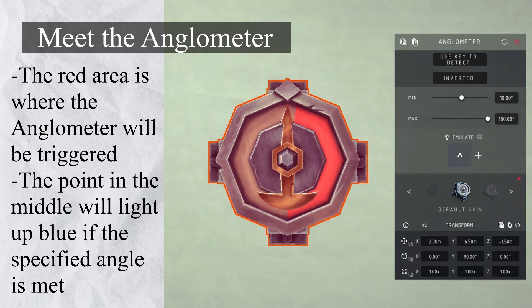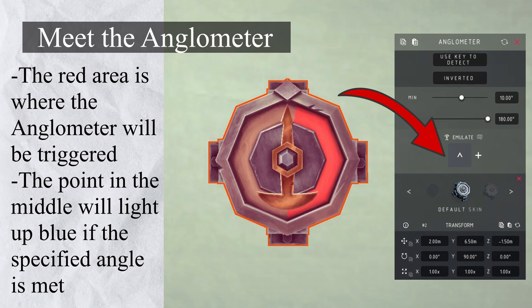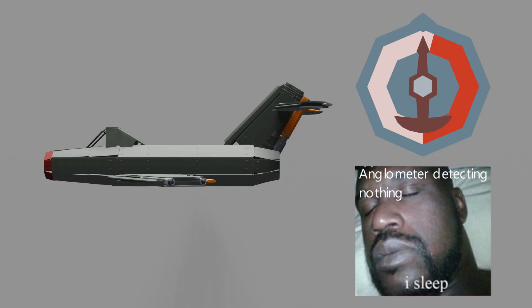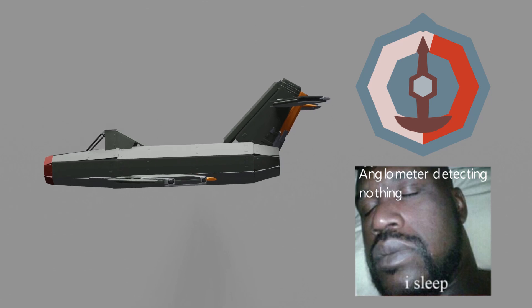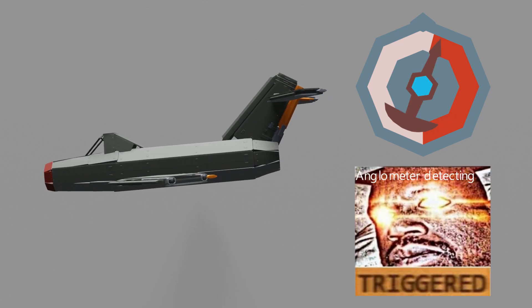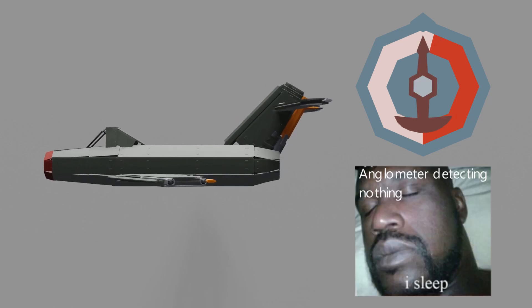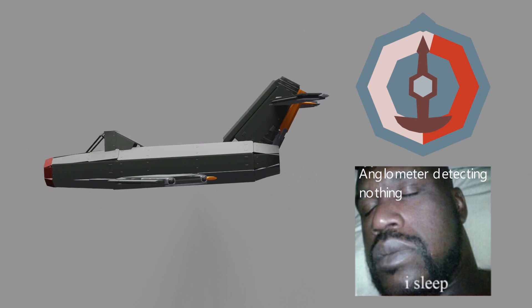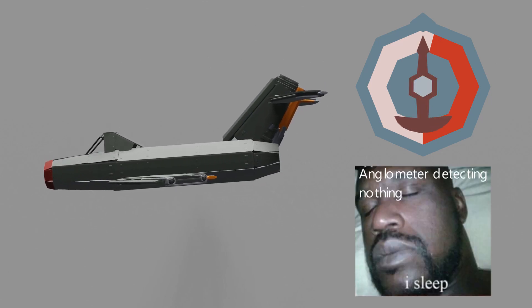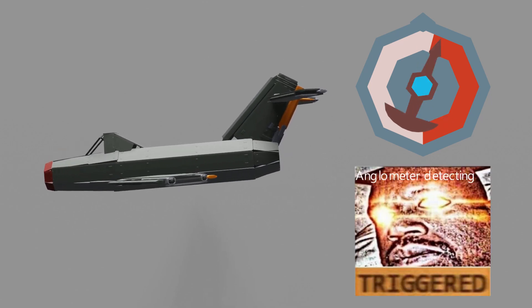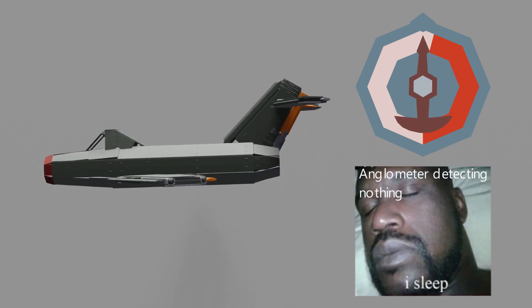If you haven't noticed, there is an option to limit the angle of your sensor and also a key that will be triggered if the specified angle is met. This means that if we set the angle to 5 degrees and our plane elevates 5 degrees down, it will trigger a key. This key should be the keybind you use to make your plane go up. Same goes for the rolling axis, but instead of the elevator keybinds, you will have to use the keybinds for your ailerons.